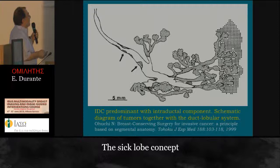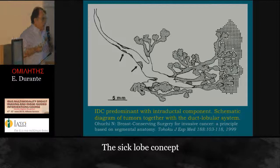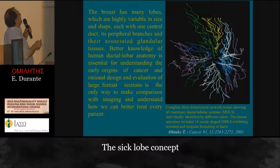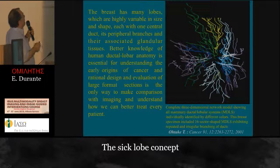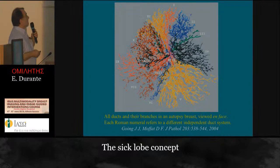Intraductal and invasive ductal carcinoma with predominant intraductal component — a schematic diagram of the tumors together with the ductal-lobular system — was made by Ohuchi, who proposed breast cancer surgery as a segmental section, like a sector. The breast has many lobes, highly variable in shape, each with one central duct, its peripheral branches, and associated glandular tissue. A better chronology of human ductal-lobular anatomy, termed the ductal-lobular unit, is key to understanding the early origin of cancer. The rational design and evolution of large-format sectioning is the only way to make comparison with imaging and ultrasound and understand how we can better treat every patient.